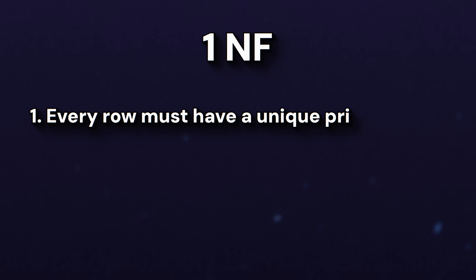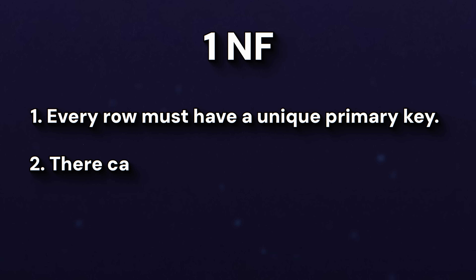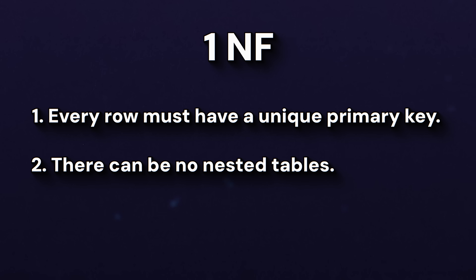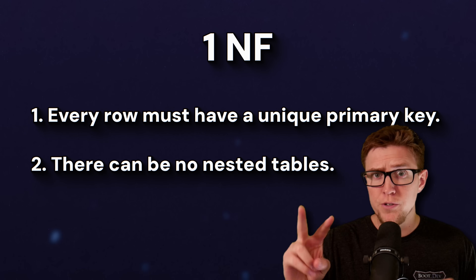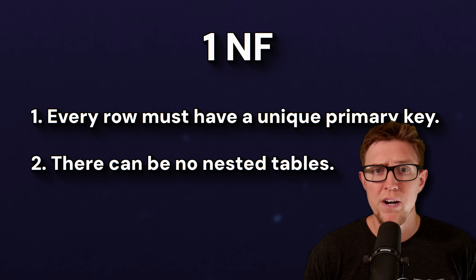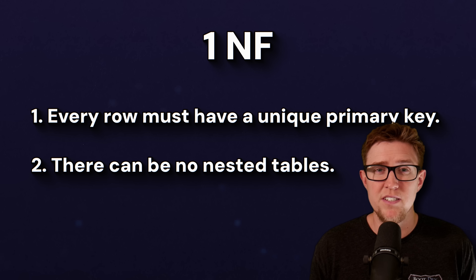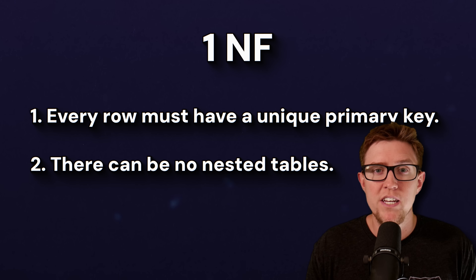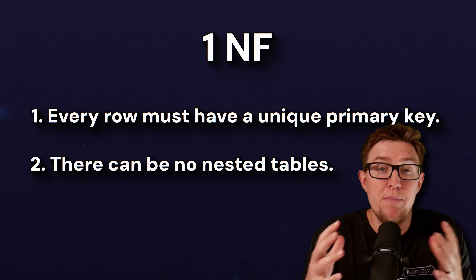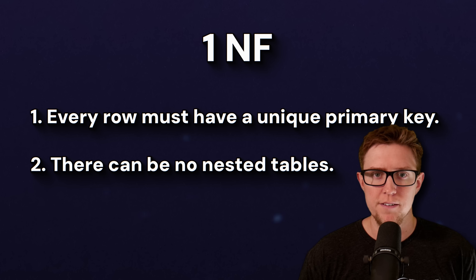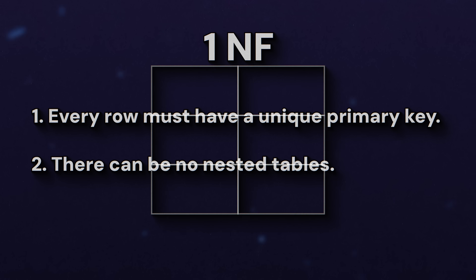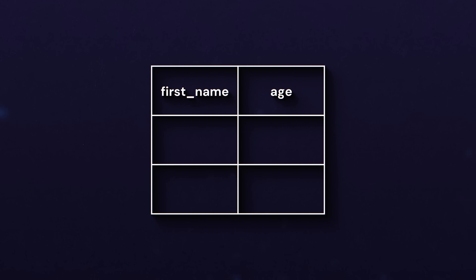Let's start with first normal form. It has two rules: first, every row must have a unique primary key; and two, there can be no nested tables. Rule number two is actually pretty easy to follow in practice — most database systems don't even let you nest tables within each other, with the exception of maybe embedding some JSON. To understand rule number one, let's say we have a users table with two columns: first name and age.